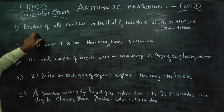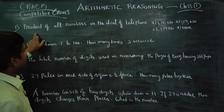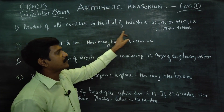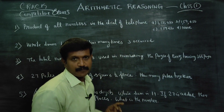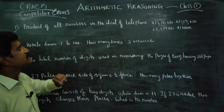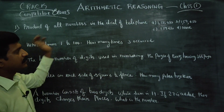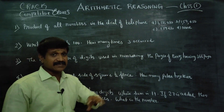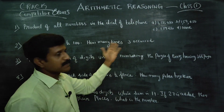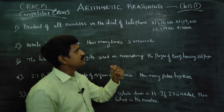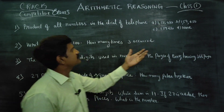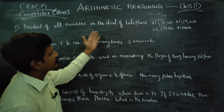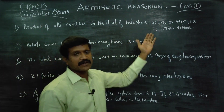First sum: find the product of all numbers in the dial of a telephone. This appears in bank exams, railway recruitment, LIC exams, and SBA clerk exams. This is the product of all numbers in the dial of a telephone.